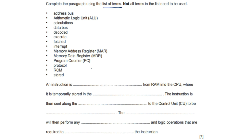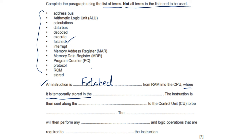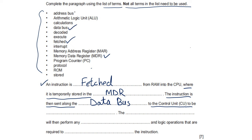Complete the paragraph about the fetch-decode-execute cycle. An instruction is fetched from RAM into the CPU, where it is temporarily stored in MDR (memory data register). The instruction is then sent along the data bus to the control unit (CU) to be decoded.